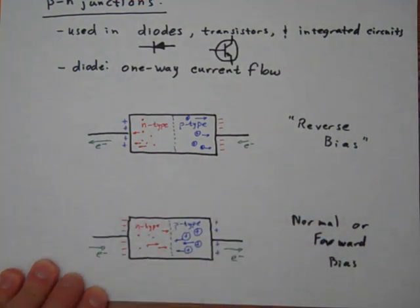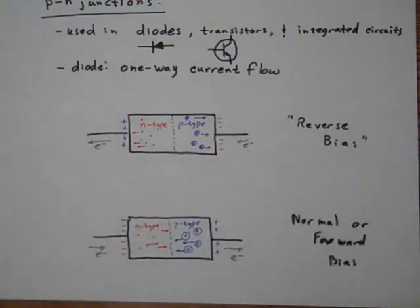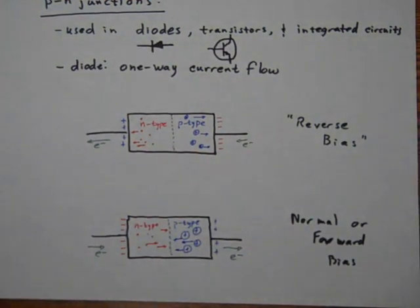So normal bias works. You get current flow that way. Reverse bias, no current flow. So useful application of these semiconductor devices.